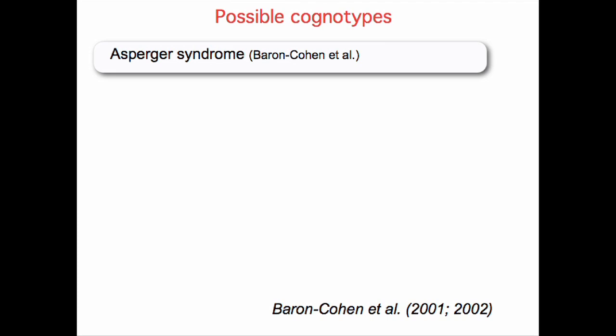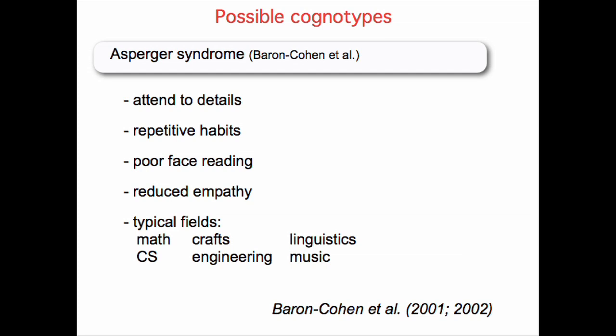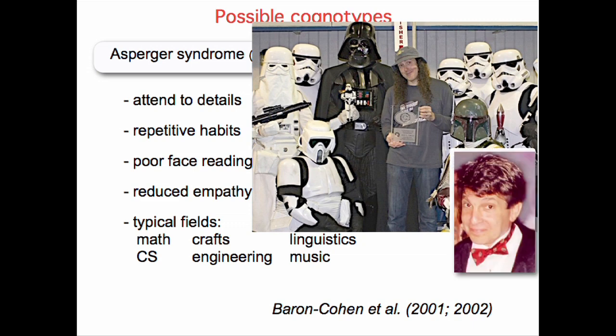Here's a completely different one: Asperger's syndrome. These are people who attend to details, tend to exhibit repetitive habits, are poor at face-reading and empathy, and often end up in math, computer science, engineering, linguistics, or music. We can often recognize them by the kinds of conventions they'll attend, or the TED talks they'll tend to give.